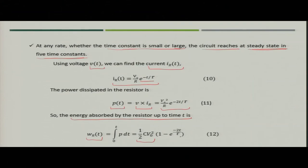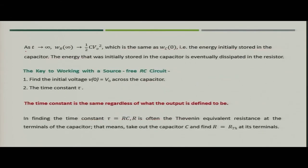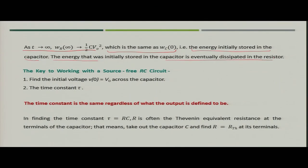When time T goes to infinity, the exponential term becomes 0, so the energy dissipated in the resistor becomes ½CV₀². This is exactly the initial energy stored in the capacitor. Thus the total energy initially stored in the capacitor is fully discharged into the resistor as time approaches infinity.